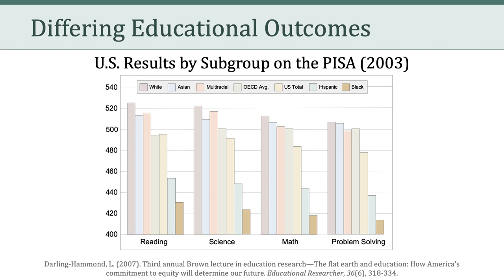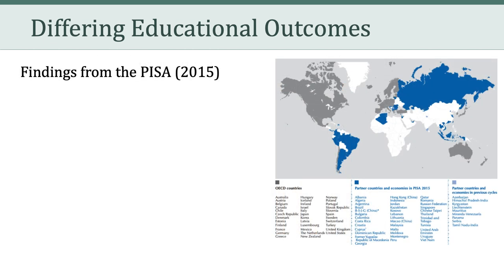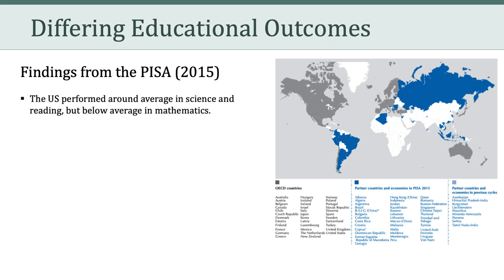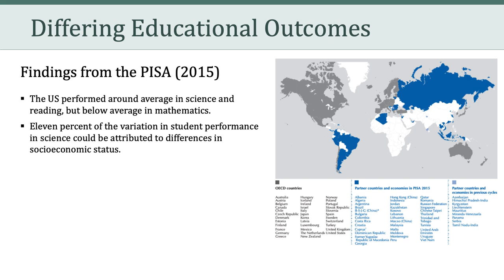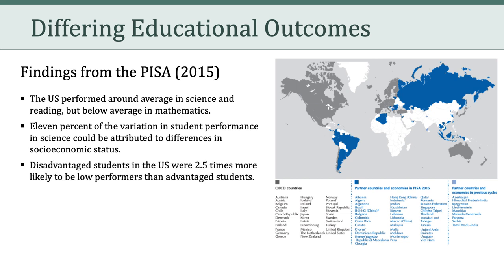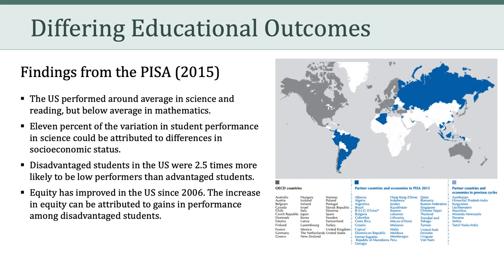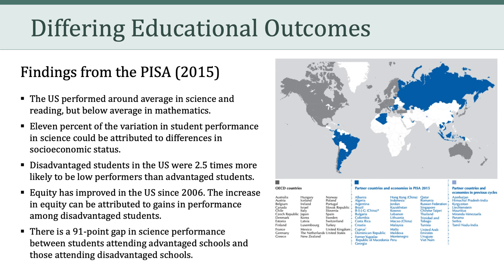The data in the Darling-Hammond article was a bit dated, so I wanted to share some of the findings from the 2015 PISA, which states that the U.S. performed around average in science and reading, but below average in mathematics. 11% of the variation in student performance in science could be attributed to differences in socioeconomic status. Disadvantaged students in the U.S. were two and a half times more likely to be low performers than advantaged students. There was the finding that equity has improved in the U.S. since 2006, and the increase in equity can be attributed to gains in performance among disadvantaged students.